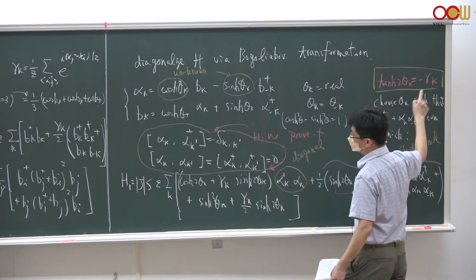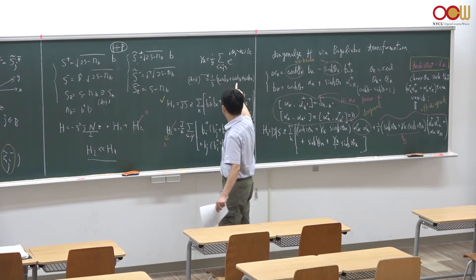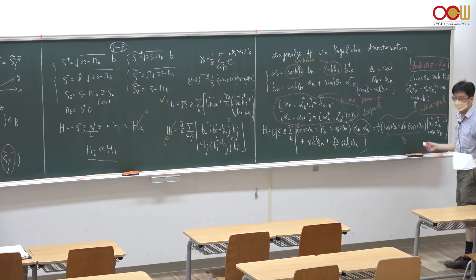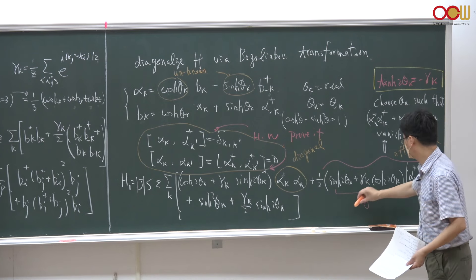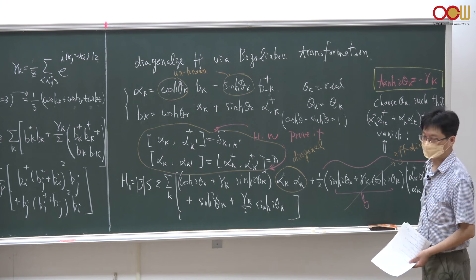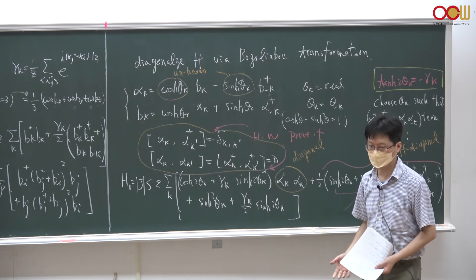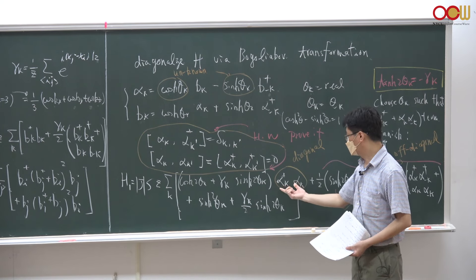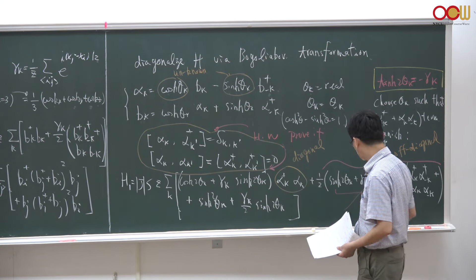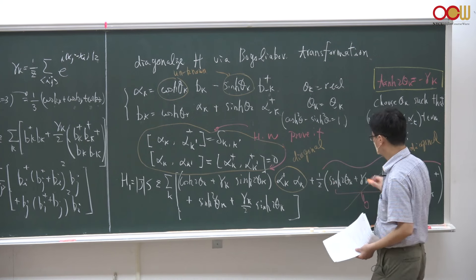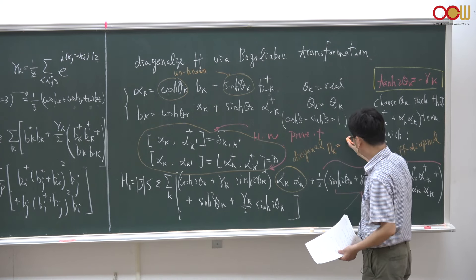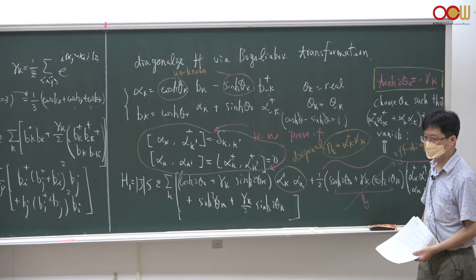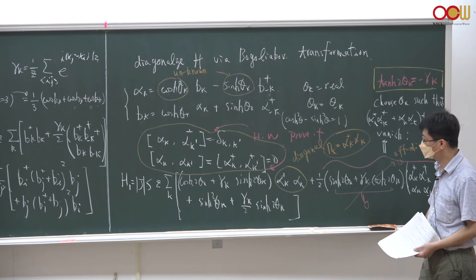Since we know gamma_k — it is (cosine(k_x) + cosine(k_y) + cosine(k_z)) / 3 for three dimensions — we therefore know theta_k. Once we know theta_k, we know everything, and we can eliminate the unwanted off-diagonal terms. The Bogoliubov transformation lets us write H1 in terms of the diagonal occupation number operator, where in the alpha basis n_k equals alpha-dagger_k alpha_k.